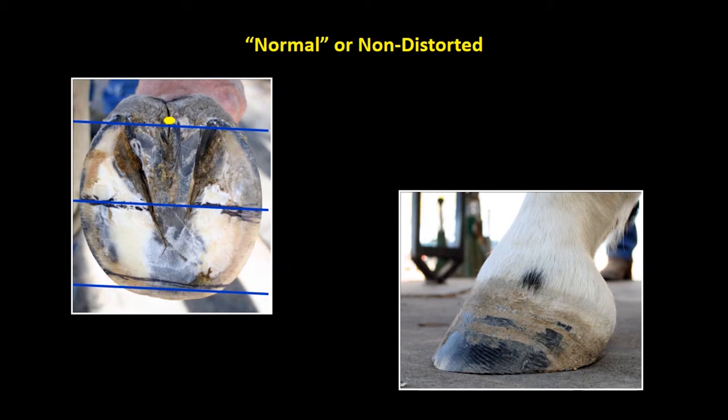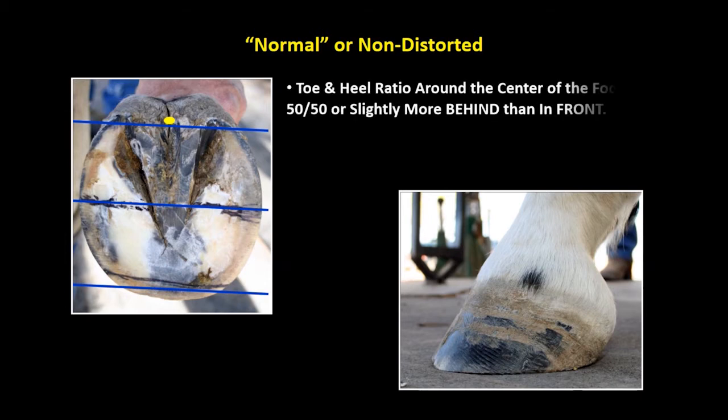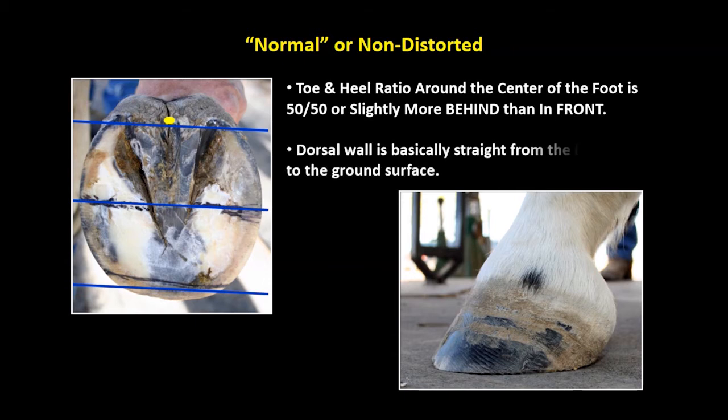Normal or non-distorted: Toe and heel ratio around the center of the foot is 50-50, or slightly more behind than in front. The dorsal wall is basically straight from the hairline to the ground surface.